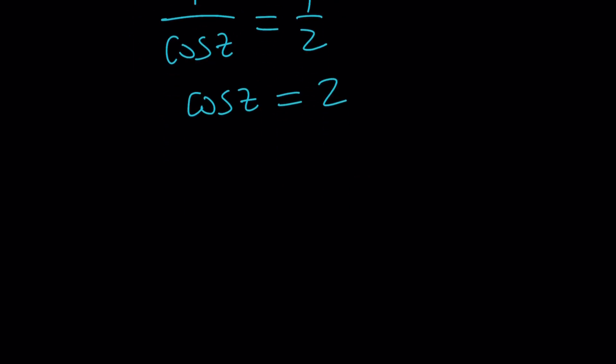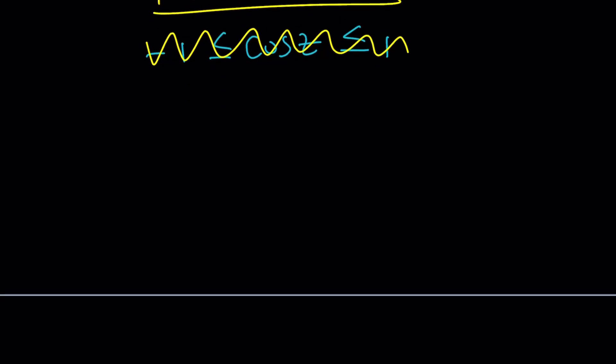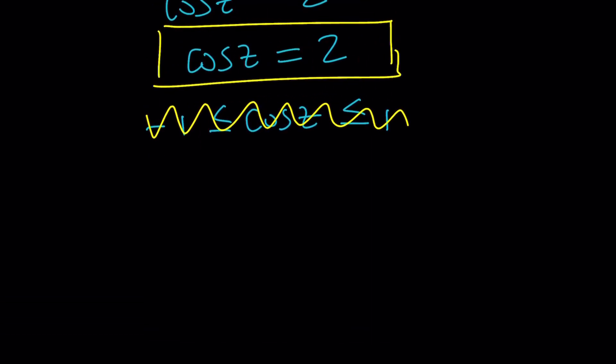But wait, isn't cosine z supposed to be between negative one and one inclusive? Yes, but that's for real numbers. And as we know, z is not real. So now let's go ahead and find out what type of triangle can we do. That's definitely going to be a non-real triangle, maybe an imaginary one.